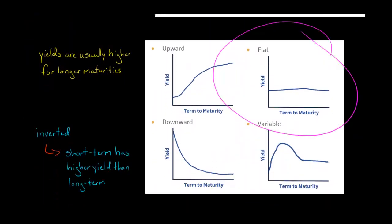For example, you could have a flat yield curve, which basically means that the yield is no different whether you have a short-term financial instrument or a long-term financial instrument. The term to maturity doesn't have much effect on the yield. That's why it's flat.